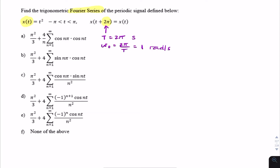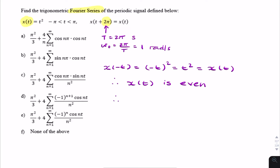The next thing we need to determine is whether x of t is even or odd. x of minus t is minus t squared, which equals t squared, which is x of t. So therefore x of t is even. Therefore the sine components, the b_n components, are all zero. So the question of finding the Fourier series is actually a question of finding a₀ and a_n.